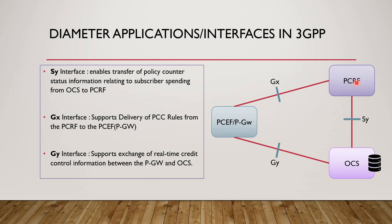When PCRF knows which PCC rules need to be enforced on a subscriber, it communicates them to PCEF via the GX interface, since PCEF doesn't have that information itself. PCRF also takes some information from OCS, combines it all, and decides the PCC rules. Those rules go to PCEF, which then enforces them. In simple terms, policy equals speed and quality — what kind of speed and quality to give you while browsing or on a voice call.